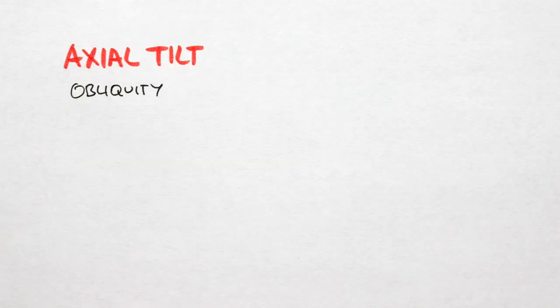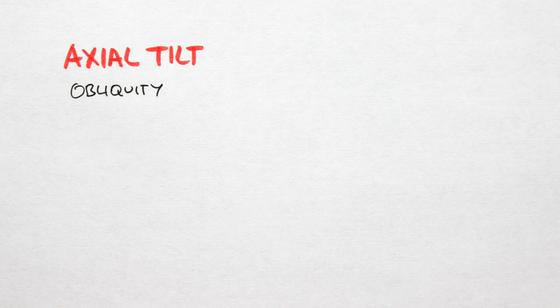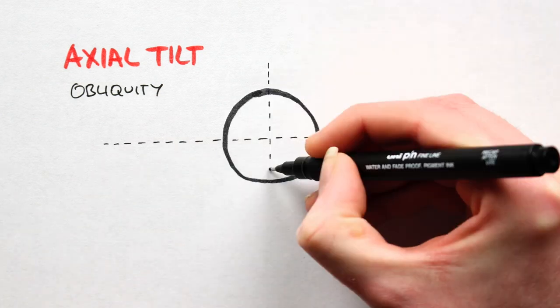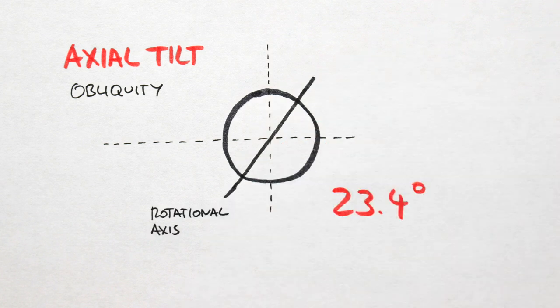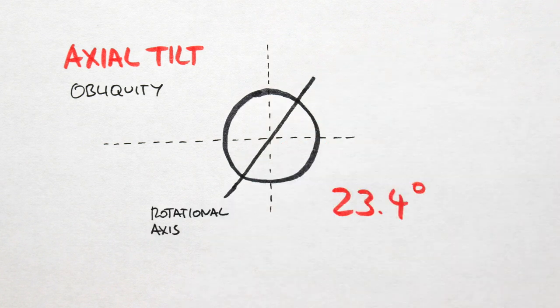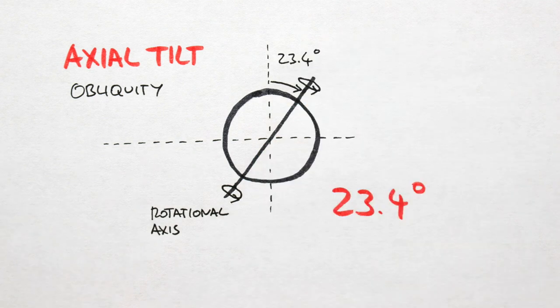Also known as obliquity, axial tilt is just a measure of how tipped over a planet is. Earth has an axial tilt of 23.4 degrees. That is, its rotational axis, the imaginary line running between the poles about which the Earth spins, is tipped over 23.4 degrees with respect to its orbital plane.